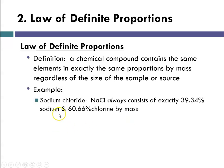Again, another example: sodium chloride will always consist of 39.34% sodium to 60.66% chlorine by mass.